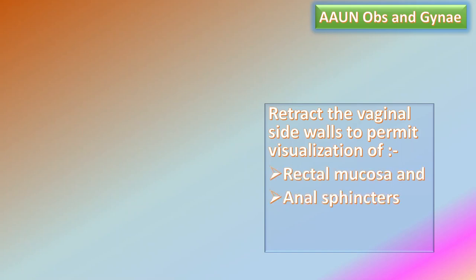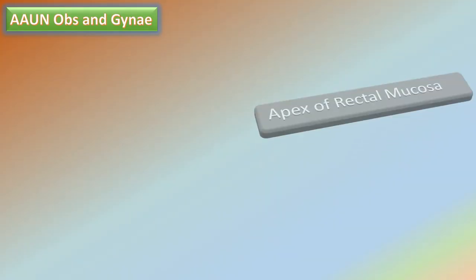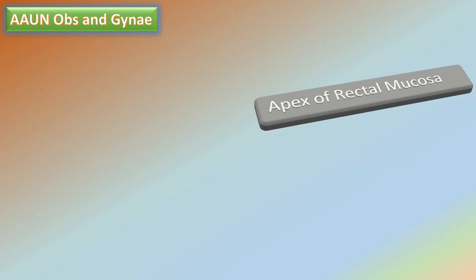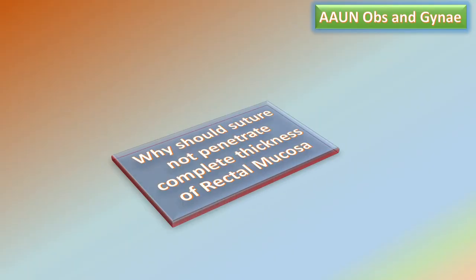The apex of the rectal mucosa is identified and the mucosa is approximated using closely spaced interrupted or running 3-0 polyglactin (Vicryl) sutures. Traditional recommendations emphasize that sutures should not penetrate the complete thickness of the mucosa into the anal canal, in order to avoid promoting rectovaginal fistula formation. The sutures are continued through the anal verge onto the perineal skin.